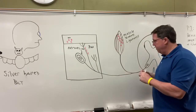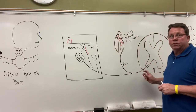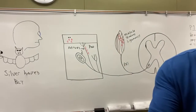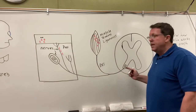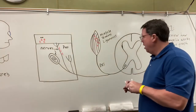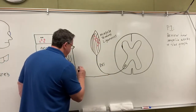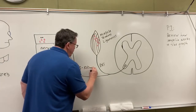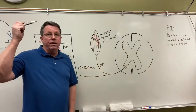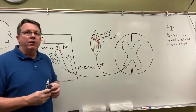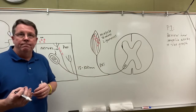Once rabies gets into the peripheral nervous system, it makes its way to the spinal cord. It travels very slowly — only about 15 to 100 millimeters per day. So if it starts in your feet and needs to travel to the spinal cord and then the brain, that takes a while. The incubation period for rabies is usually between two months and can be as long as six years.